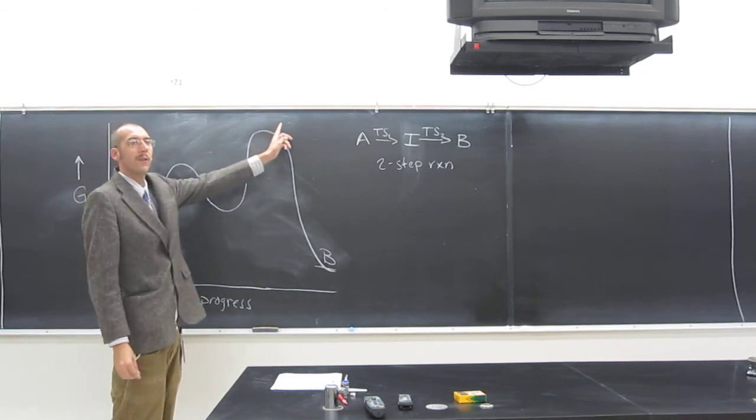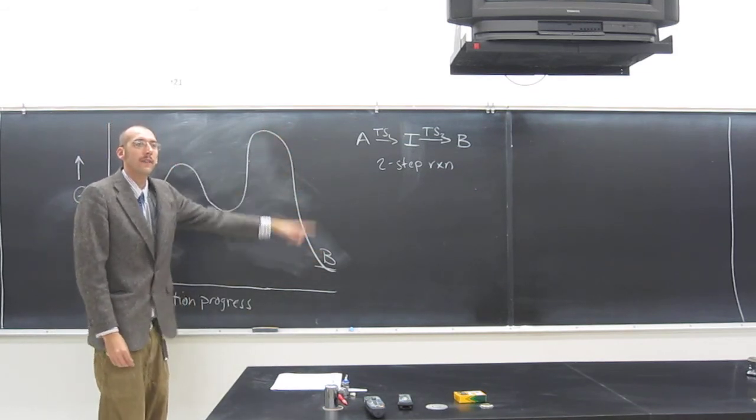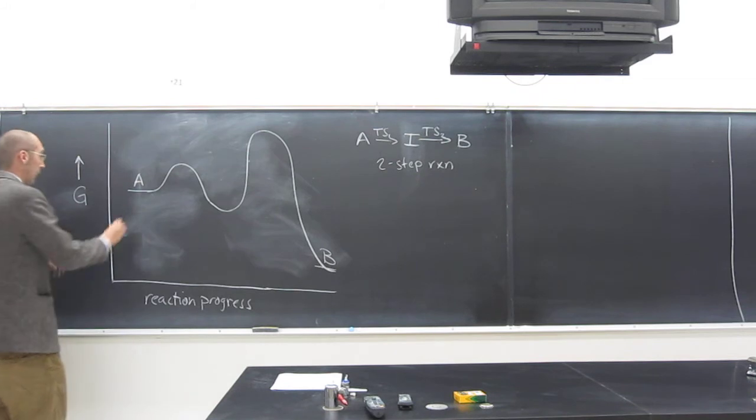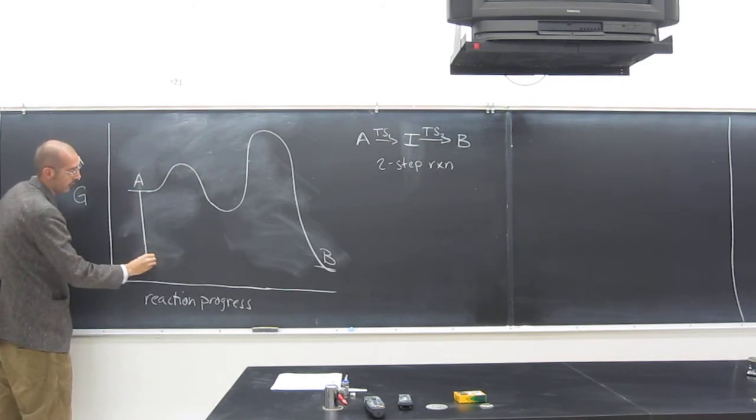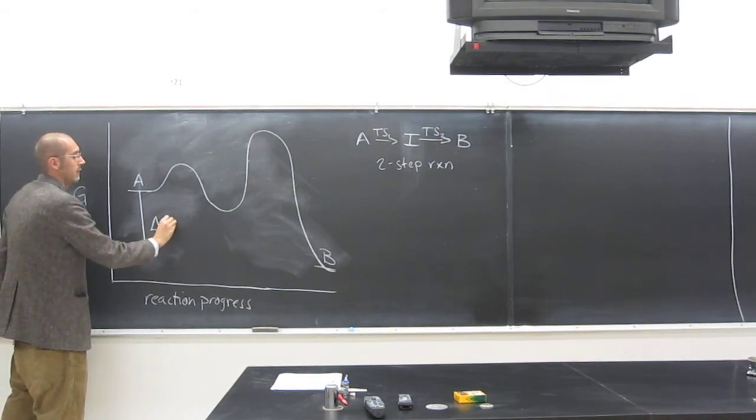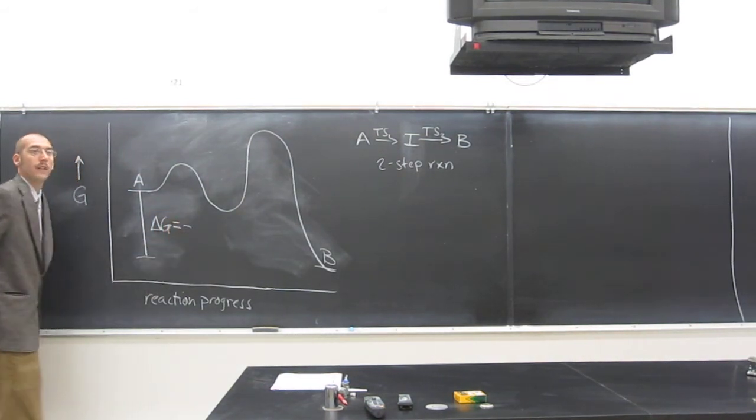So now you can see we're getting more energy this way, okay, from this one. So this, from reactant to product, is still delta G, still minus.